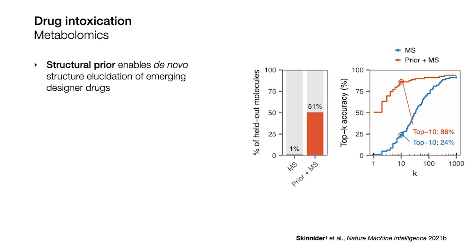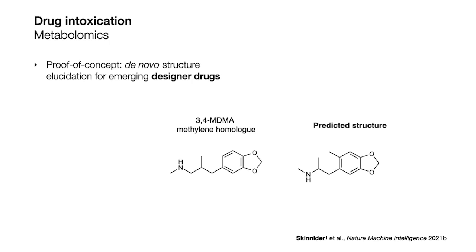We could also get the correct structure in the top 10 almost 90% of the time — so 9 times out of 10, the correct answer is somewhere inside our model's shortlist of 10 compounds. We noticed that even when our model failed, it tended to predict something very close to the truth. For example, for a designer analog of MDMA — or ecstasy — our model got the core structure right and just misplaced a methyl group.